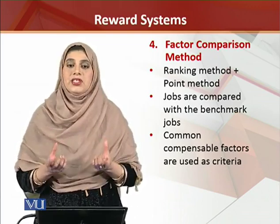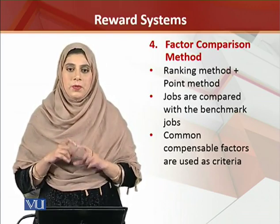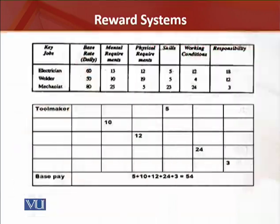The whole process can be seen through a demonstration using a grid. There is an upper table and a lower table. In the upper table, key jobs are defined: electrician, welder, and mechanist. We have mentioned the base rate daily — meaning the daily wage rate for each job. For example, electrician is 60, welder is 50, and mechanist is 80.